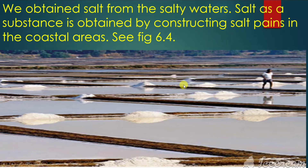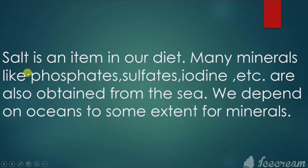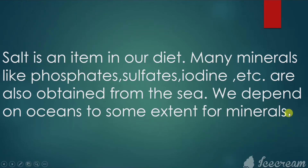Salt is obtained by creating salt pans in the coastal area, as shown in figure 6.4 — all those white areas are the salt pans. Salt is an important item in our diet. Many minerals like phosphates, sulphates, iodine, etc. are also obtained from the sea. We depend on oceans to some extent for minerals.